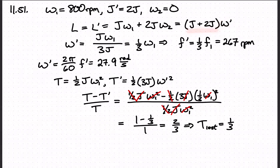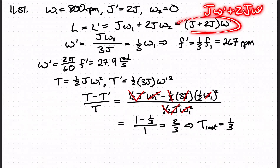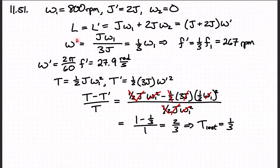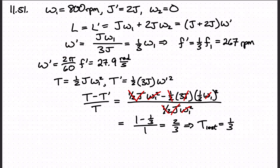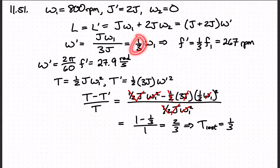So we get J·ω′ plus 2J·ω′ equals the initial angular momentum. Solving for ω′, we get that it equals ω₁ — the initial angular velocity of the first disk — over three.